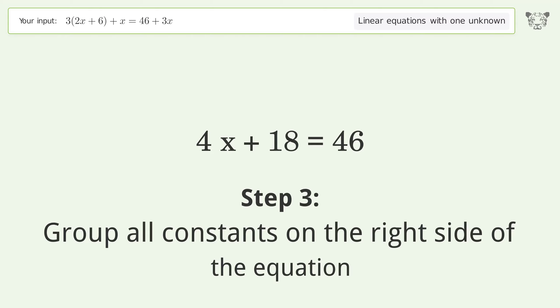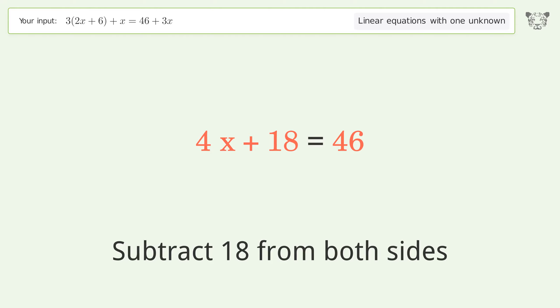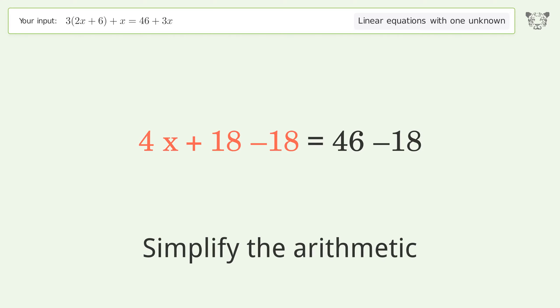Group all constants on the right side of the equation. Subtract 18 from both sides. Simplify the arithmetic.